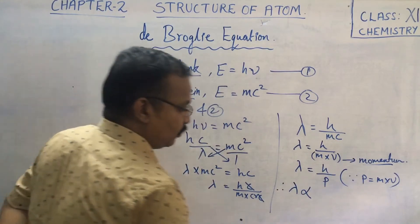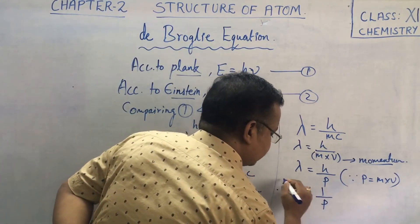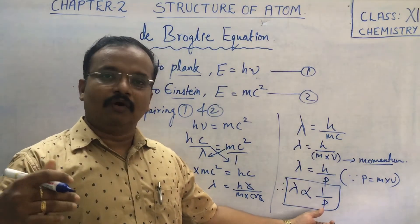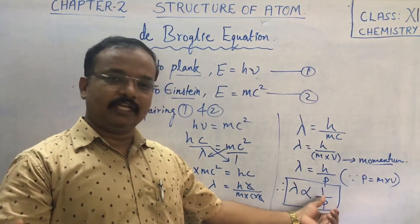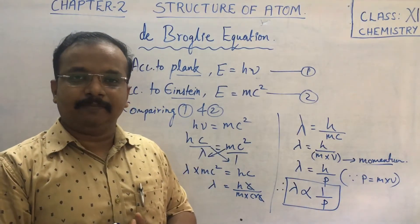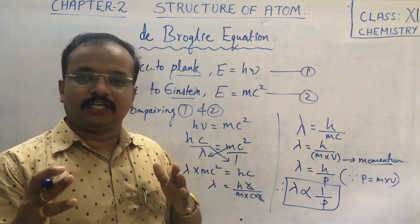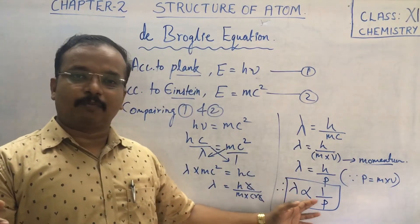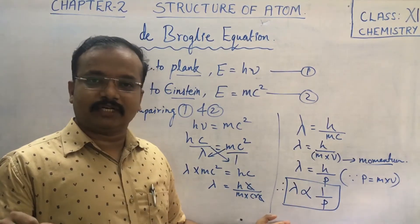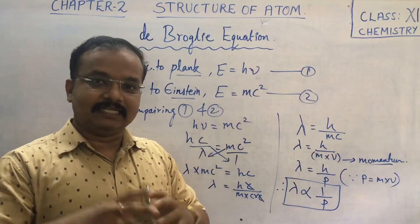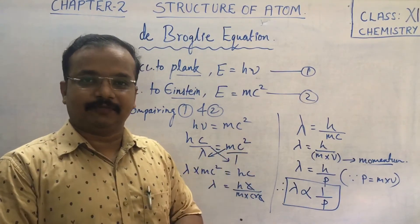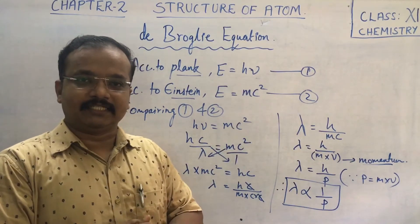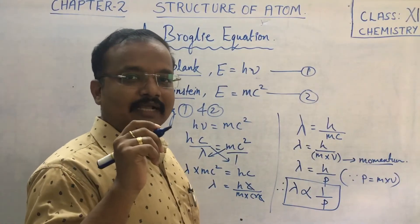We can write lambda is equal to H divided by p. Since H is a constant, lambda is proportional to 1 over p. So wavelength is inversely proportional to momentum. We can conclude that wave nature — represented by lambda — is inversely proportional to momentum, which represents the particle nature. This is the de Broglie equation: lambda equals H over p.